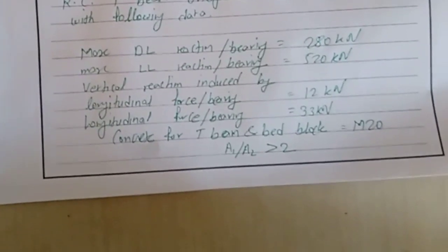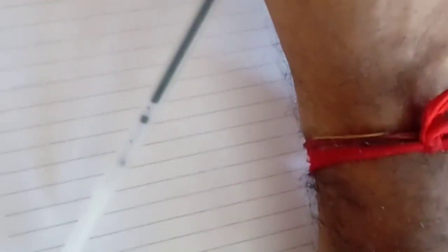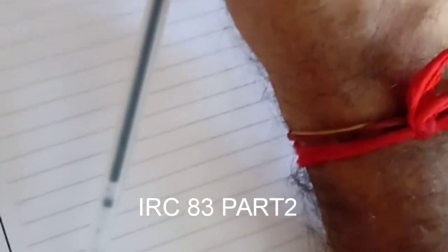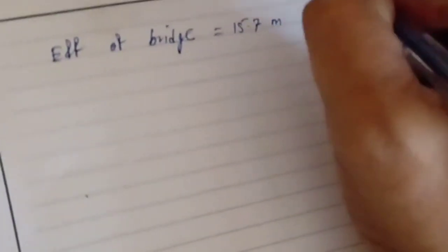The concrete used for T-beam and bedblock is M20. To begin with the solution for this problem, we need the table from IRC 83 part 2. Starting with the effective span of bridge, we're taking here 15.7 meters, assuming 0.35 on both sides, so L plus D is the effective span.